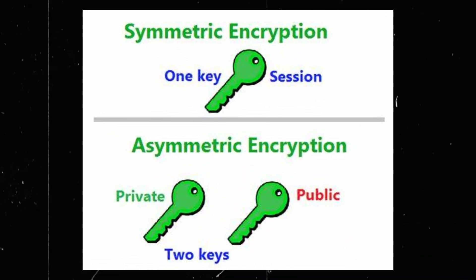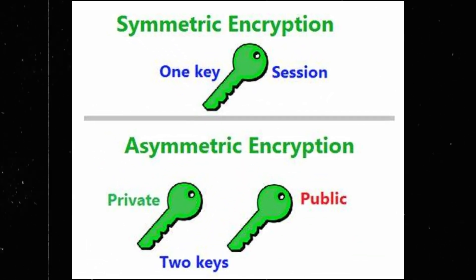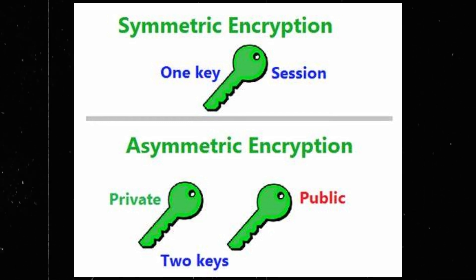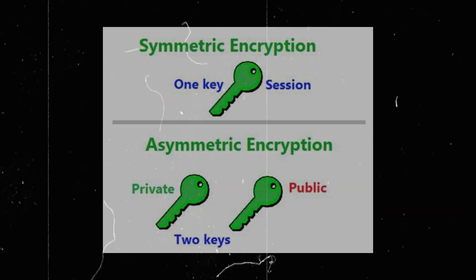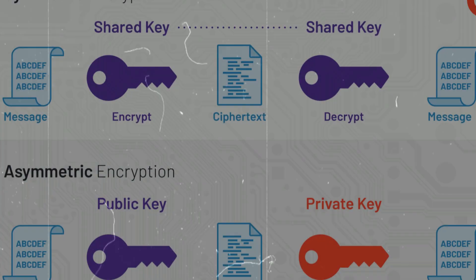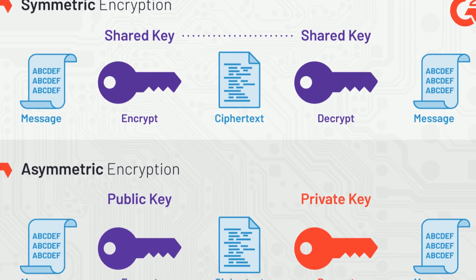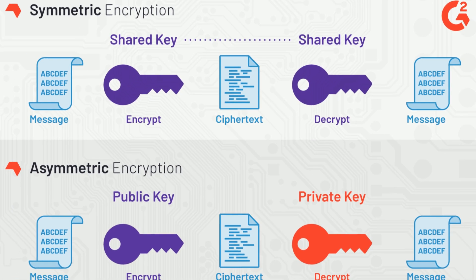Symmetric encryption uses the same key for locking and unlocking, while asymmetric encryption uses a pair of keys for different purposes. Both methods help keep messages secret, but they work in different ways.